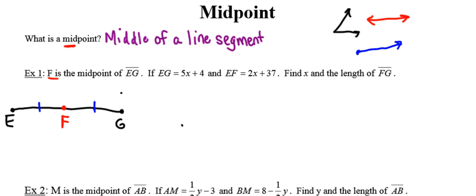Now that I've got my diagram, I'm going to mark everything I'm given in the problem. The distance between points E and G is 5X plus 4 — in other words, the length of the whole big line segment is 5X plus 4. The distance between points E and F is 2X plus 37. Now EF is that little piece, and E to G represents the whole thing, so the distance between E and G is much larger than the distance between points E and F.